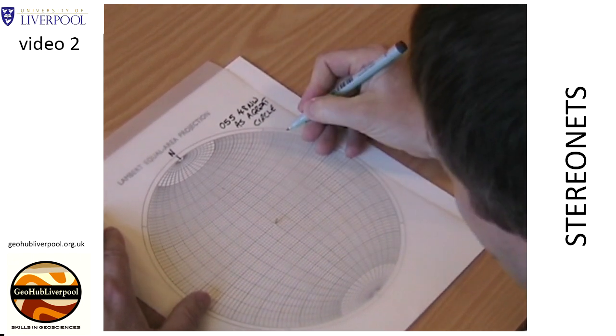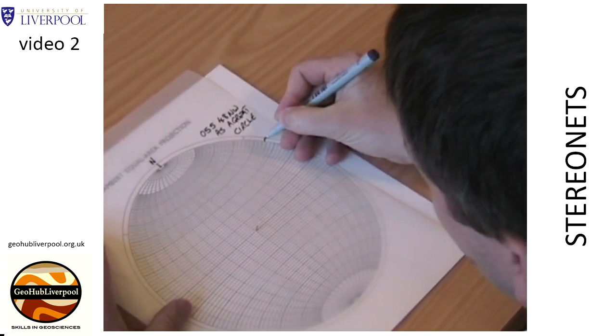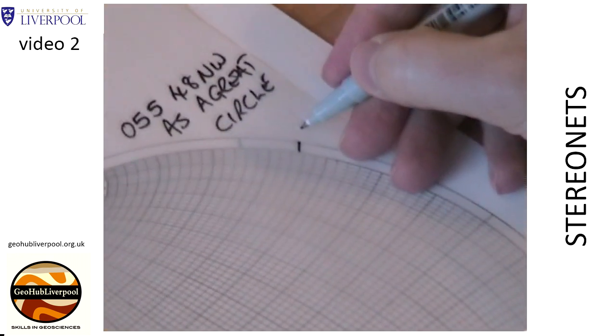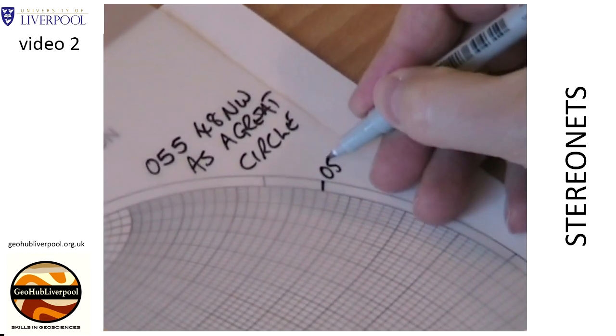Mark the strike of the plane on the tracing paper. Rotate the tracing paper so that this mark lies on the north pole on the stereonet.